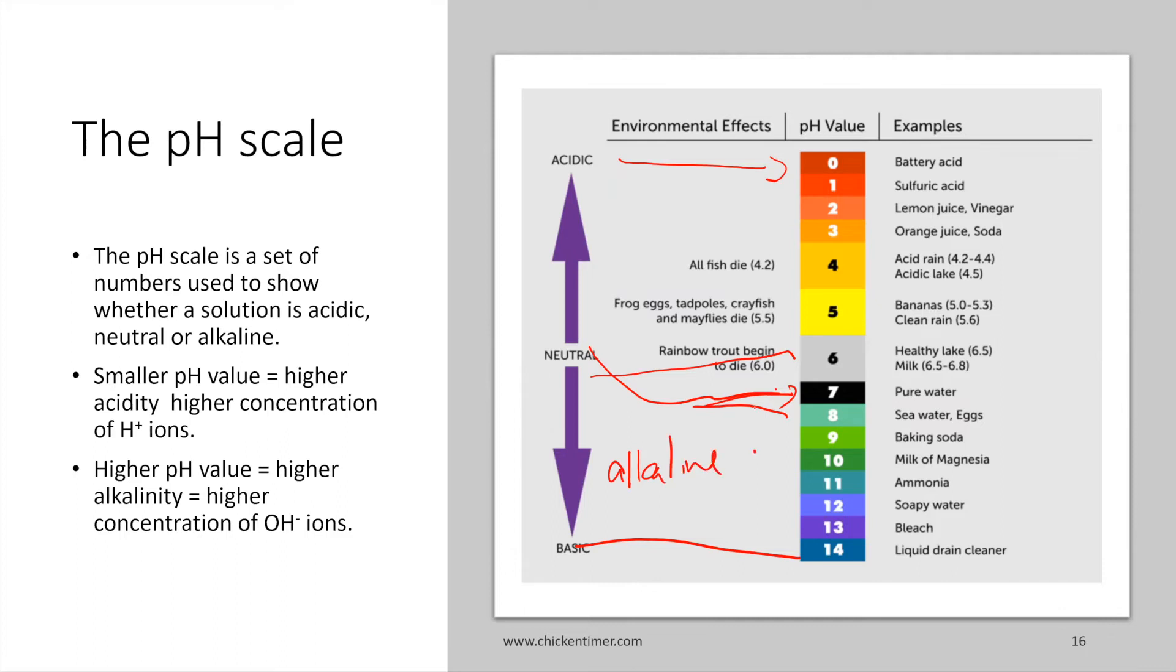At pH values which is 0, the smaller the pH value, the higher the acid concentration. That means the higher the concentration of H plus ions.